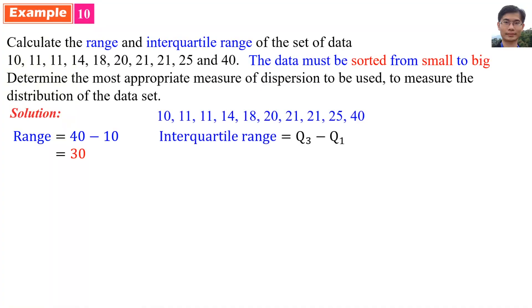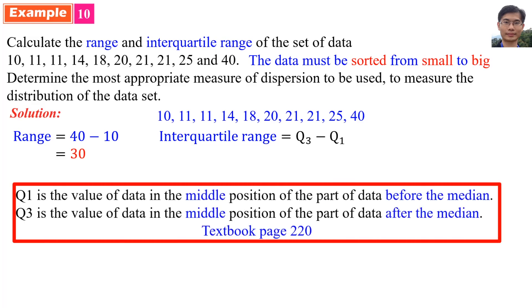Interquartile range equals third quartile minus first quartile. First quartile is the value of data in the middle position of the part of data before the median. And third quartile is the value of the data in middle position of the part of data after the median. So, we need to find the median. So, median is here. For median, there are 6 data. After median, also there are 6 data. Then, the first quartile is here and the third quartile is here. So, 21 minus 11, so we get 10.